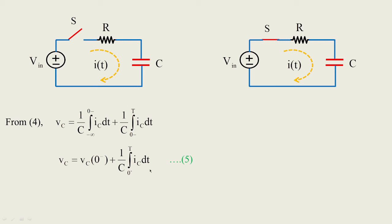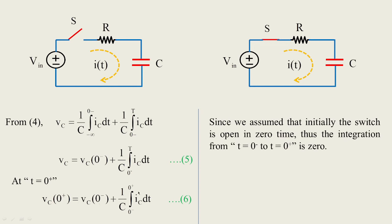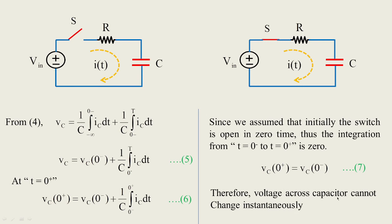At t = 0+, the voltage will remain as it is, so the integral component drops from equation 6, giving us vc(0+) = vc(0−). Just before and after the switching conditions, the voltage across the capacitor cannot change instantaneously. Just as the current through the inductor cannot change instantaneously, likewise the voltage across the capacitor cannot change instantaneously. These are two important points we need to remember.